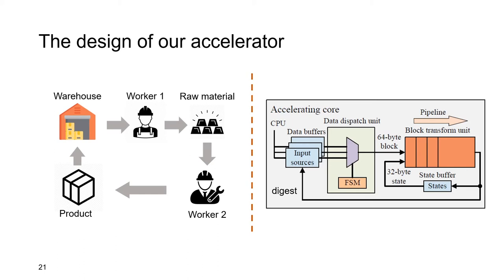The core of our accelerator is mainly composed of three parts: the data buffer, the data dispatch unit, and the block transform unit. The data buffer is like the warehouse — it stores all variables in SHA-256-crypt. The data dispatch unit generates a 512-bit block each cycle. The pipelined block transform unit transforms the block and outputs the digest, which is then stored in the data buffer as new input.